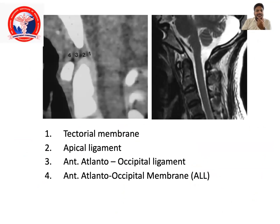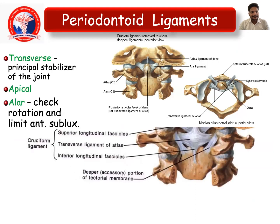This image demonstrates all four ligaments of the apex: tectorial membrane, apical ligament, anterior atlanto-occipital ligament, and anterior atlanto-occipital membrane. The periodontic ligaments include the transverse ligament, which is the principal stabilizer of the joint, and the apical and alar ligaments. The alar ligaments are for rotation and they limit the anterior subluxation of the cervical spine.